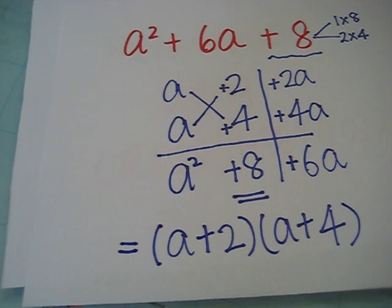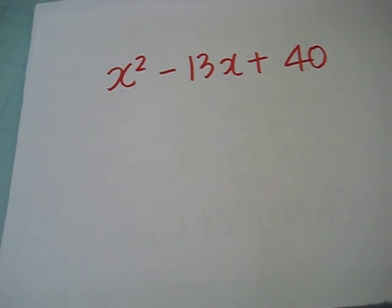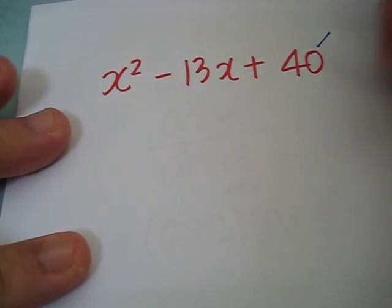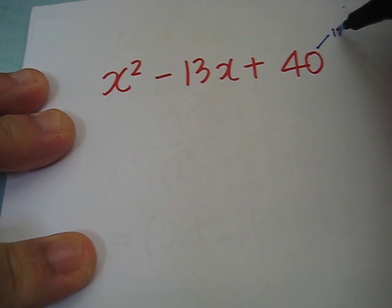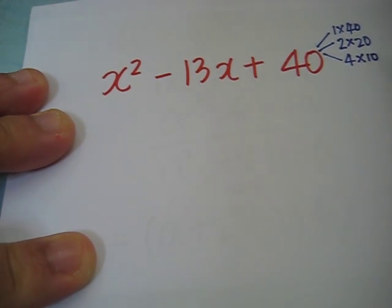Now, let's try another one. We have x squared minus 13x plus 40. Let's list down the possible 4 pairs of factors. 1 times 40, 2 times 20, 4 times 10, 5 times 8.